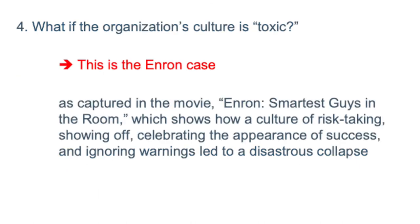What if the company's culture is toxic? This is the Enron case, as captured in the movie Enron's Smartest Guys in the Room, which shows how a culture of risk-taking, showing off, celebrating the appearance of success, and ignoring warnings led to a disastrous collapse. The movie is like a study of an organizational culture and a cautionary tale.